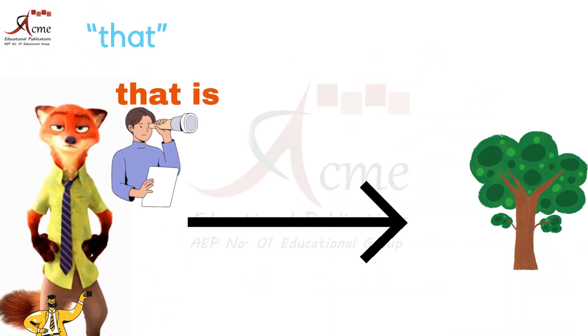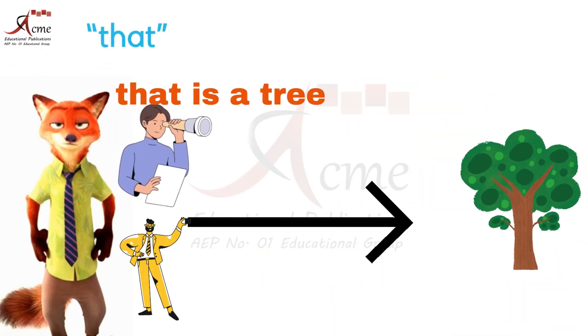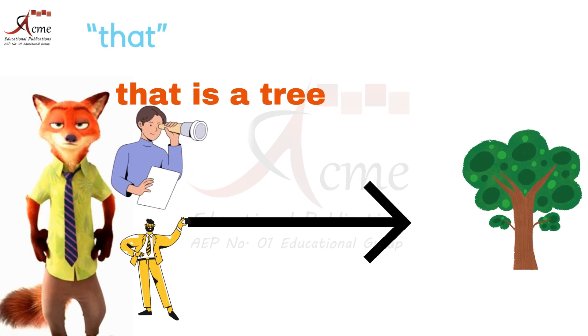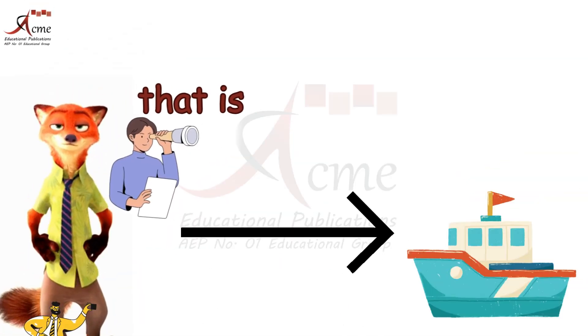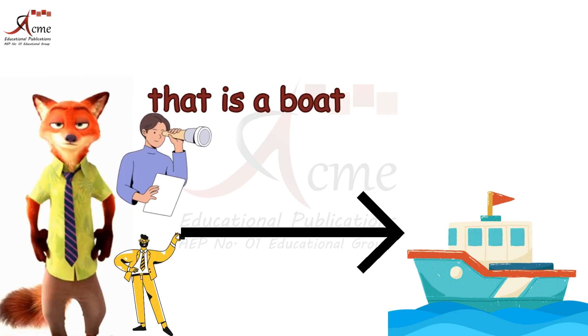These things are right here with us. On the other hand, that is used when we talk about something a little farther away, like that is a tree or that is a boat. They are a bit more distant from us.